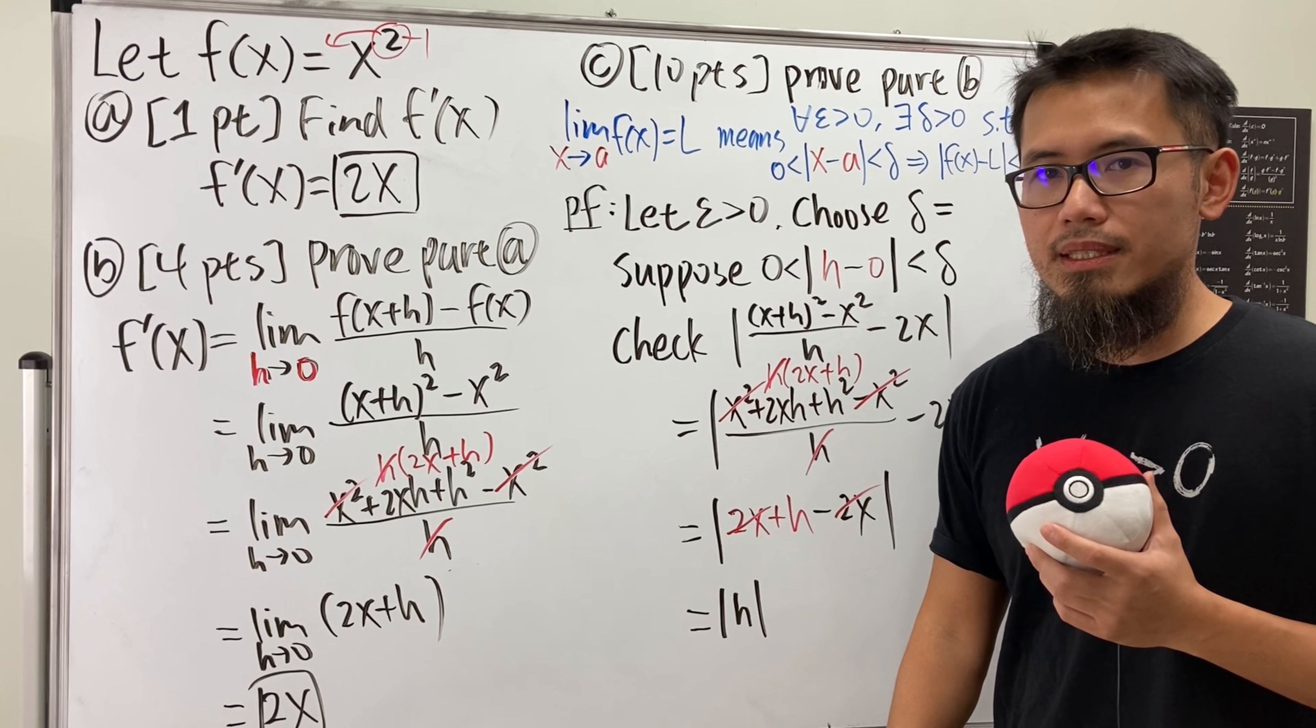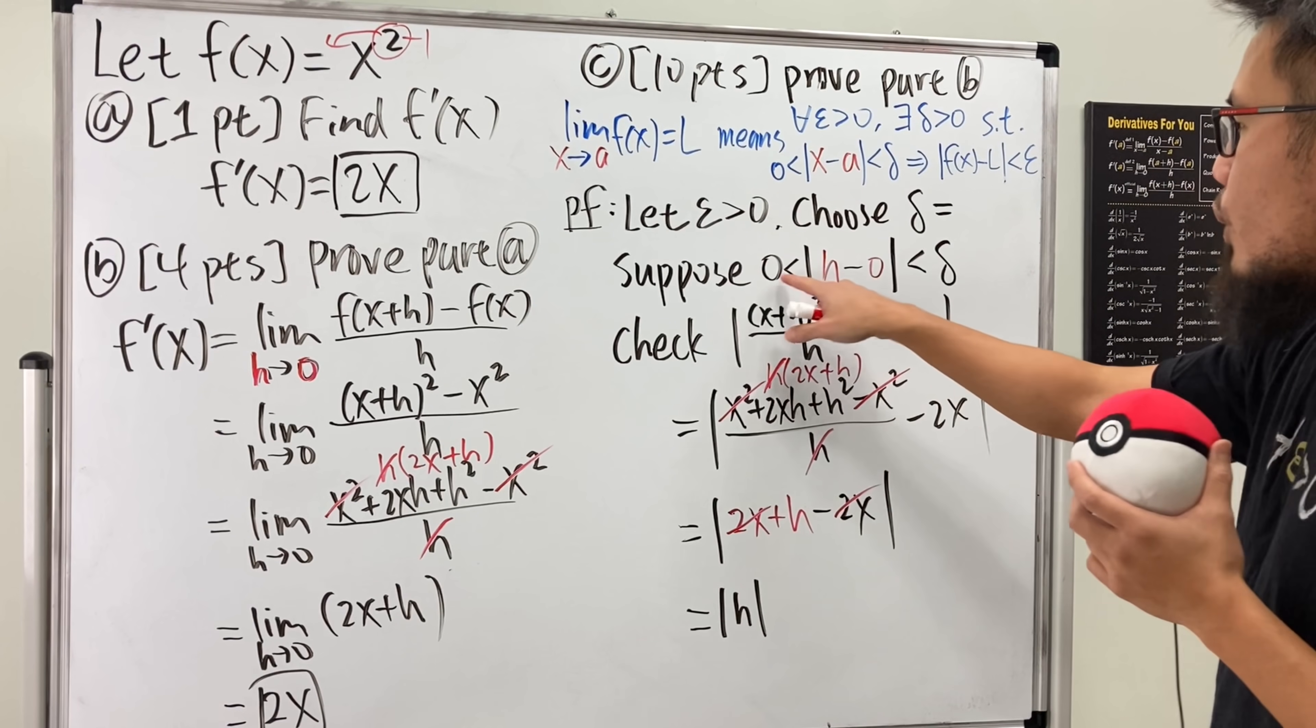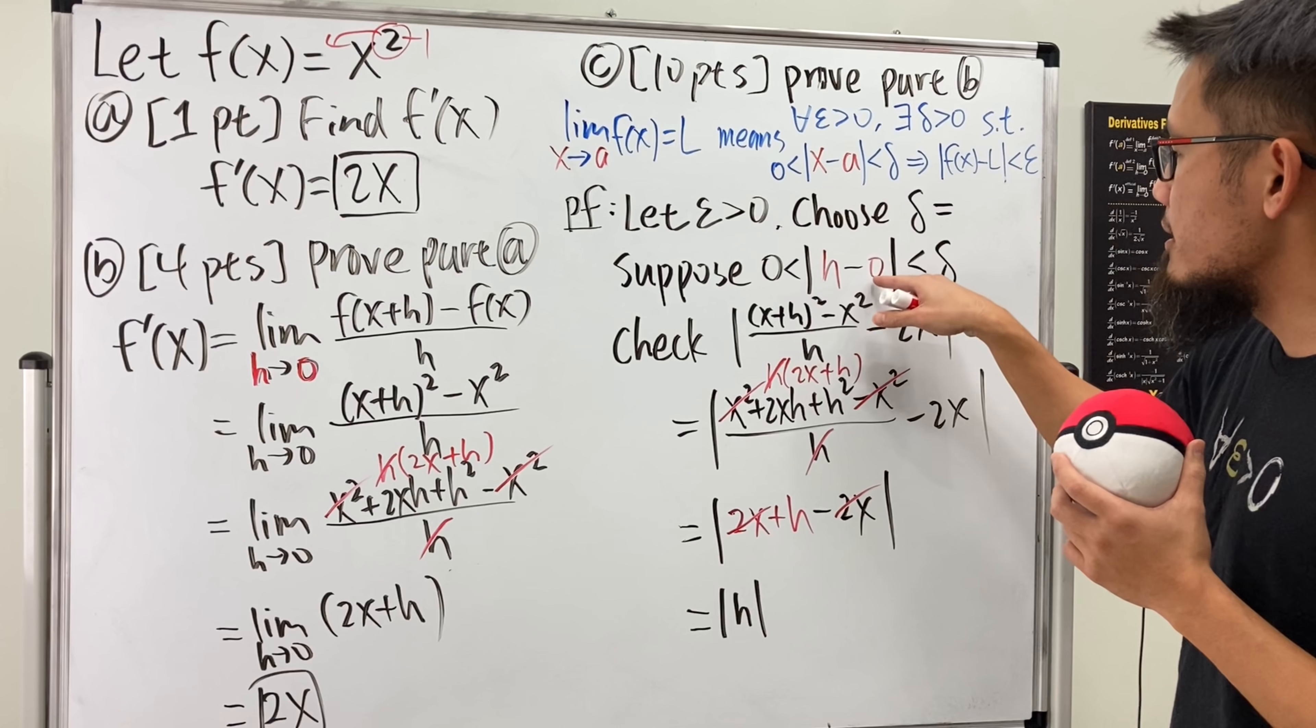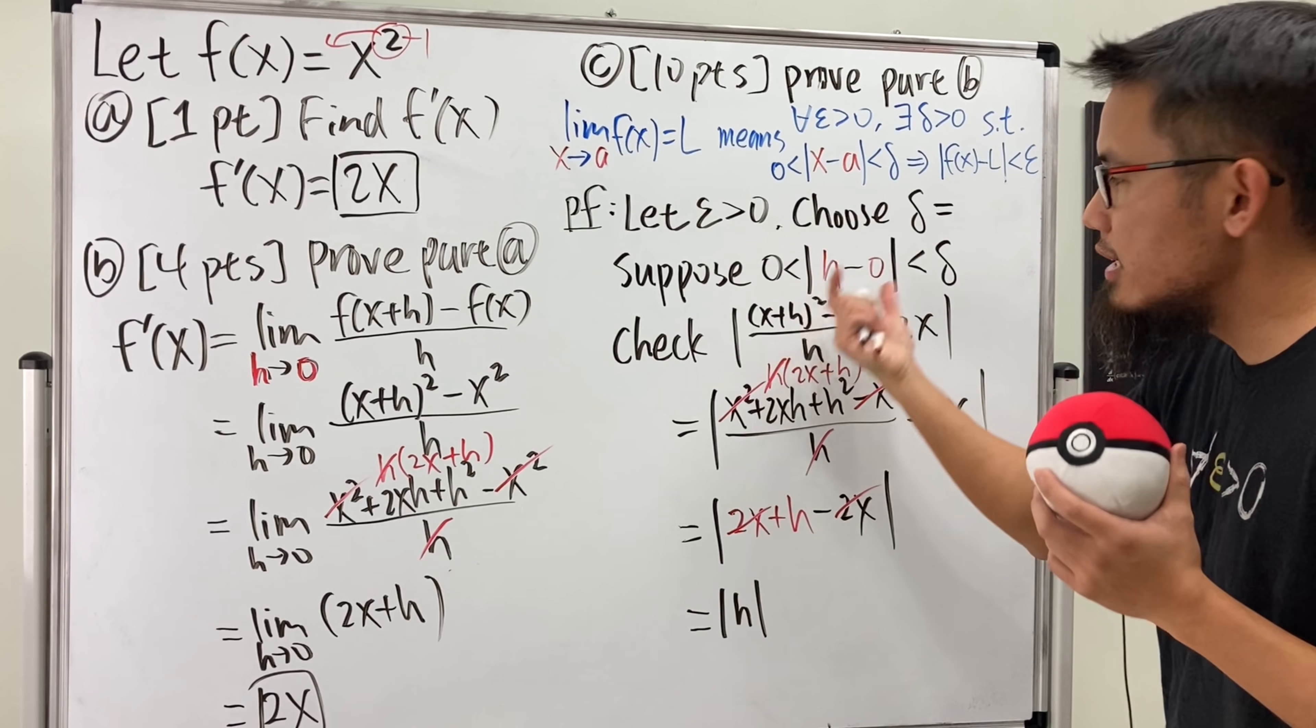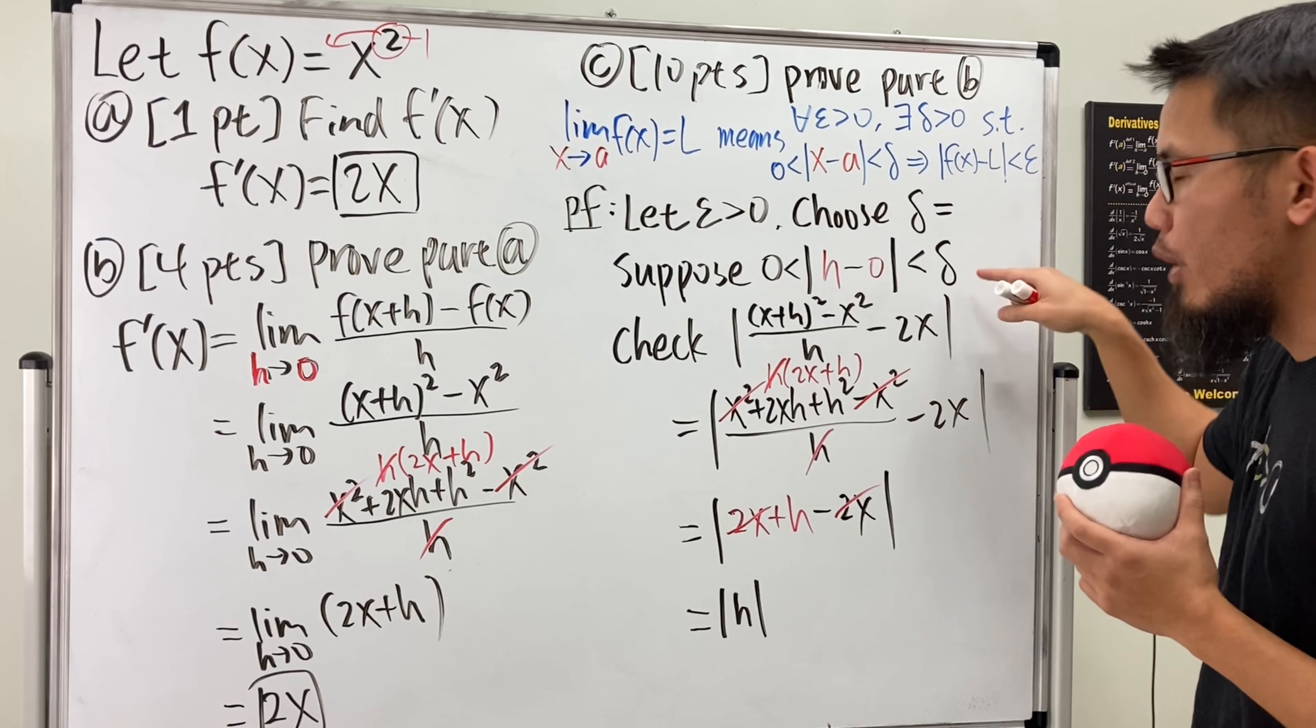Now, we look back. Now, you see, this is what we suppose. And h minus 0, of course, it's just h, right, in the absolute value. We have this to use. The absolute value of h is less than delta.